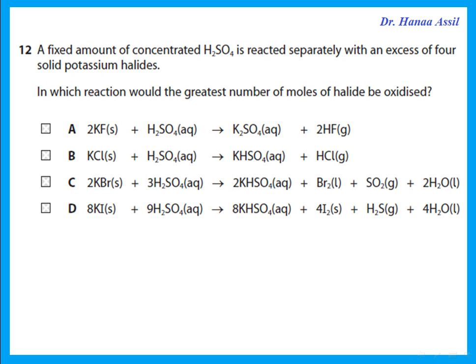Concentrated sulfuric acid reacted separately with excess solid potassium halides — in which reaction is the greatest number of moles of halide oxidized? With fluoride, it just reacts and stops. With chloride, it forms HCl which is not a good reducing agent. With bromide, several products form. With iodide, HI is produced — HI is a very good reducing agent and continues to react with the sulfuric acid to give iodine and H₂S. So iodide gives the greatest number of moles of halide oxidized.